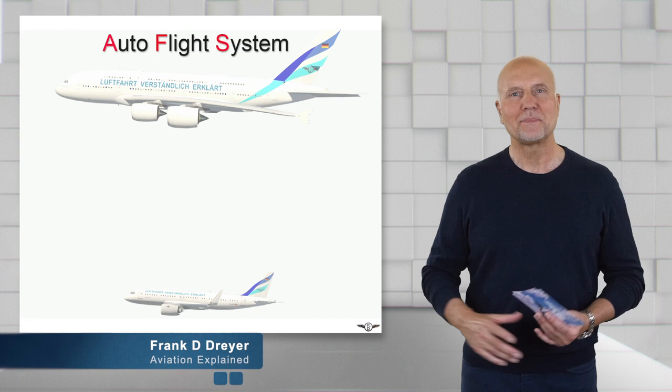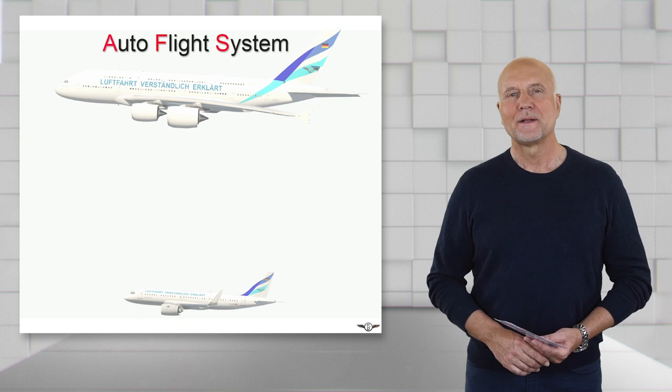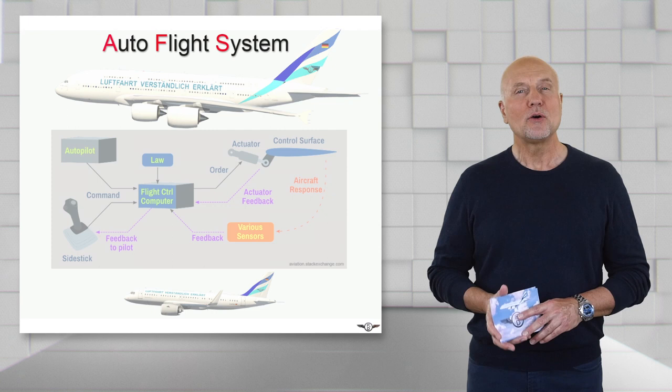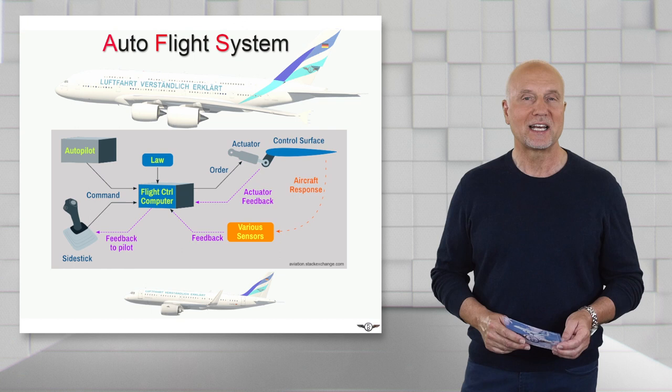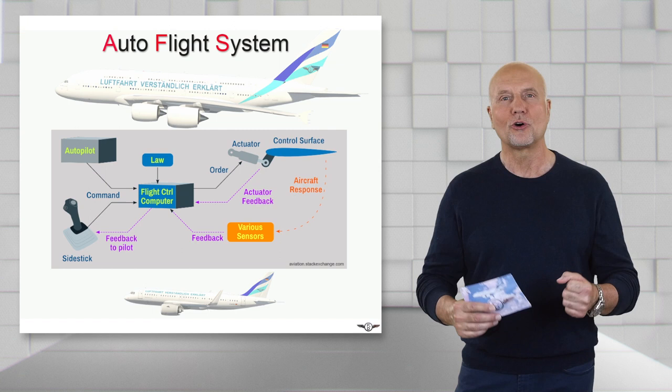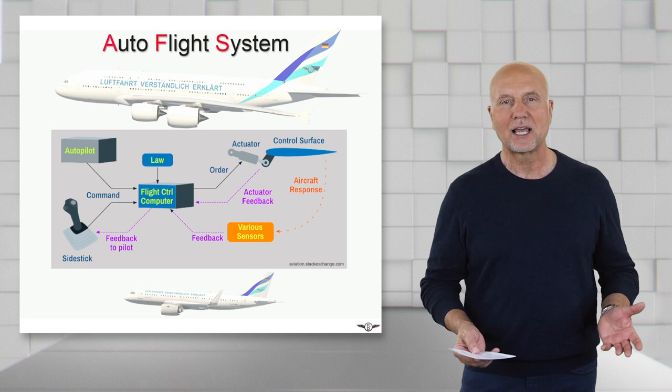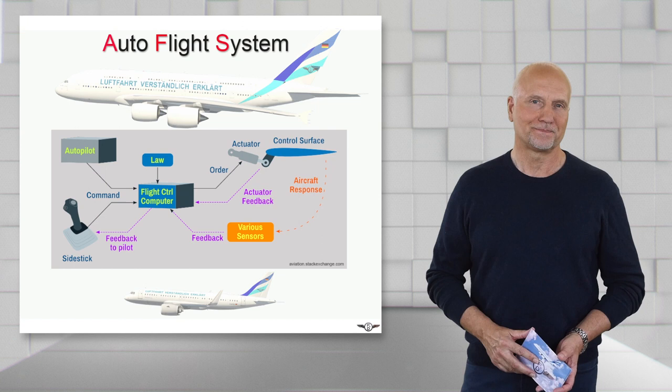Today we will continue with the Auto Flight System, but before I start, a few words to the expression fly-by-wire aircraft. Fly-by-wire or electronic aircraft control is a signal transmission technology for the operational flight control of the aircraft.